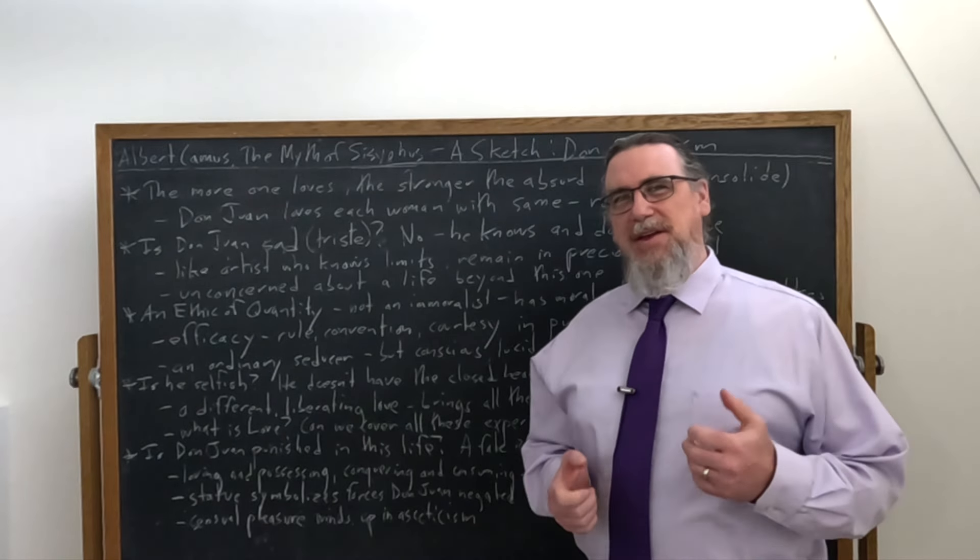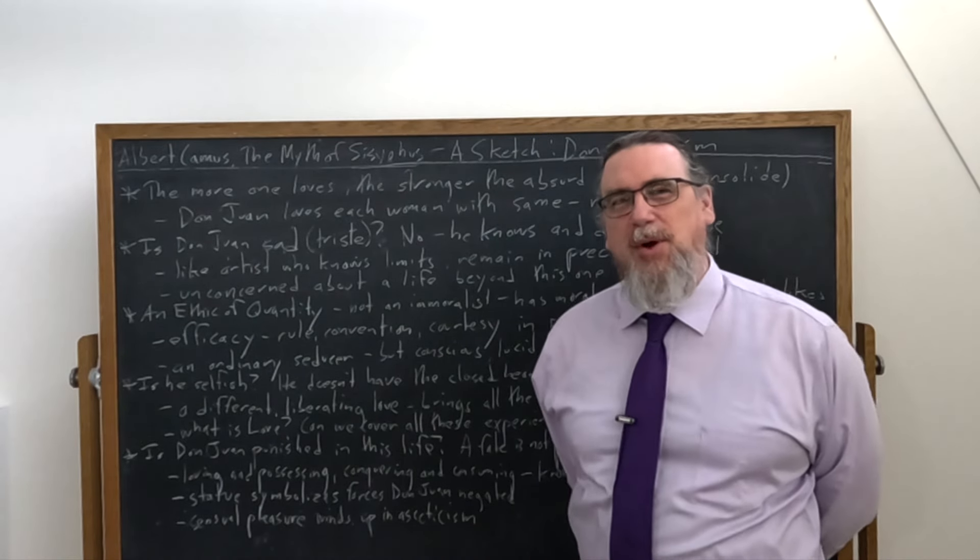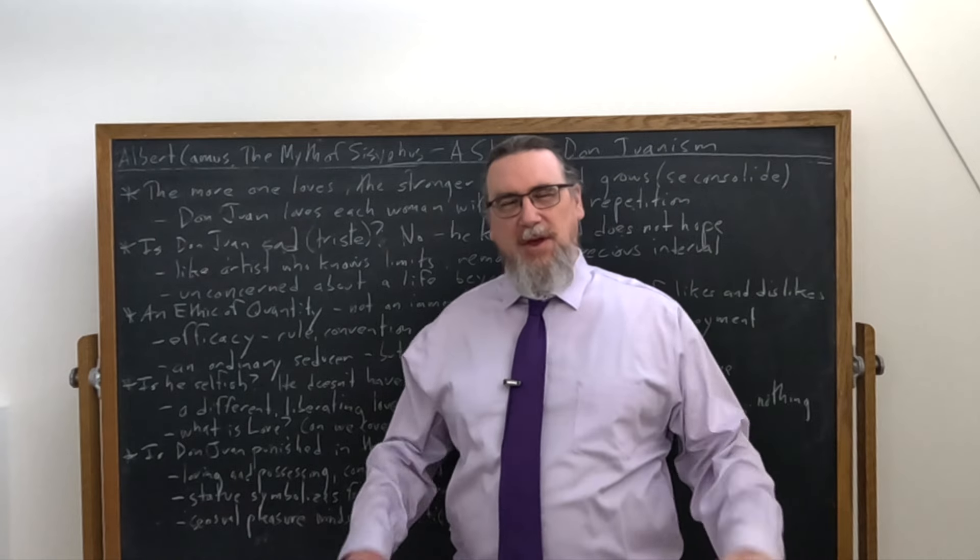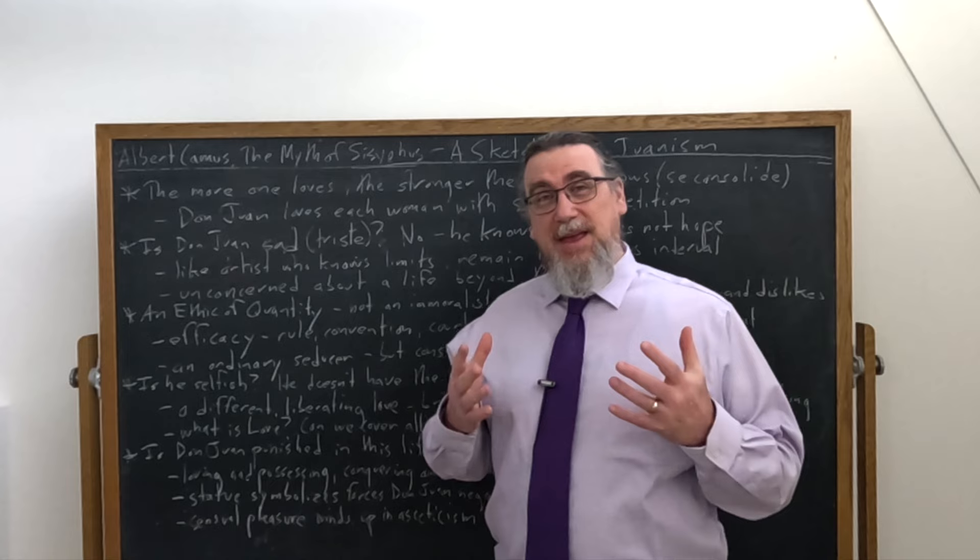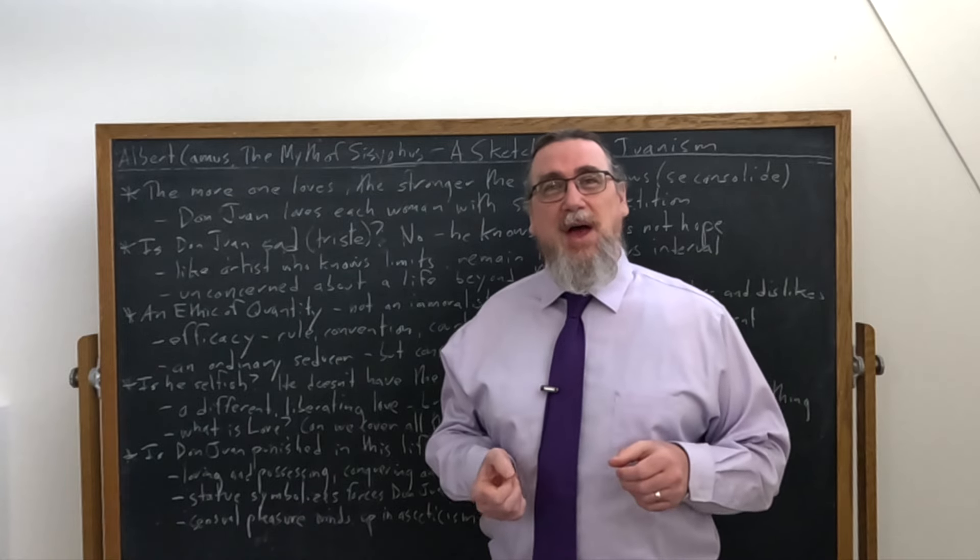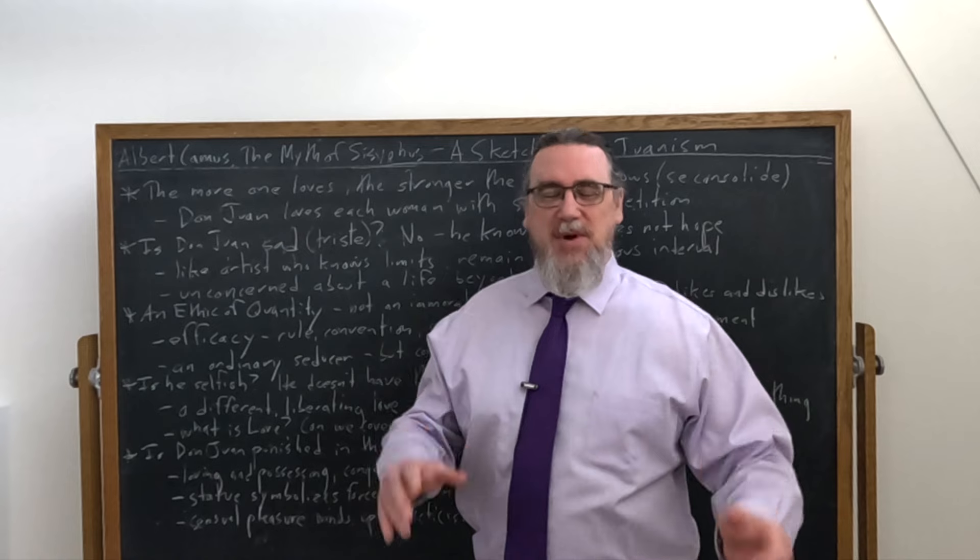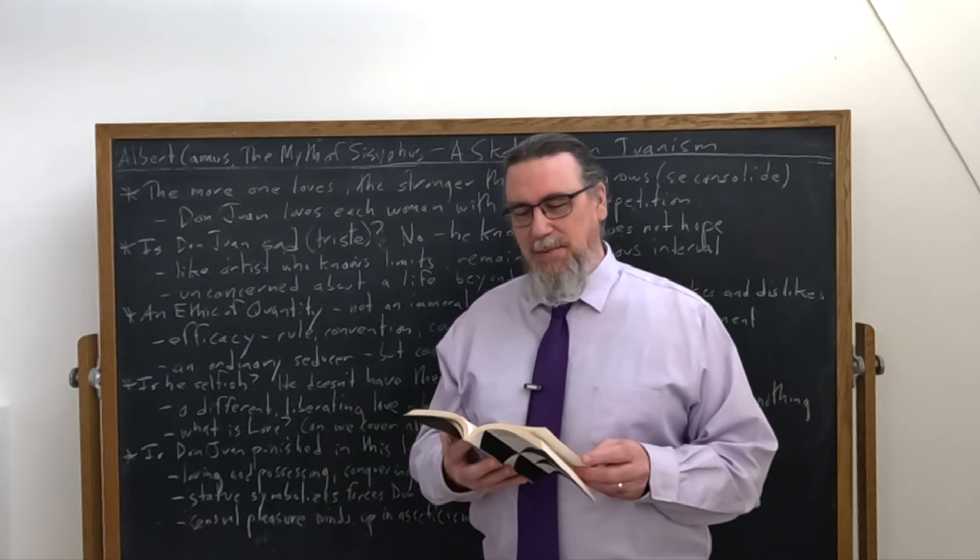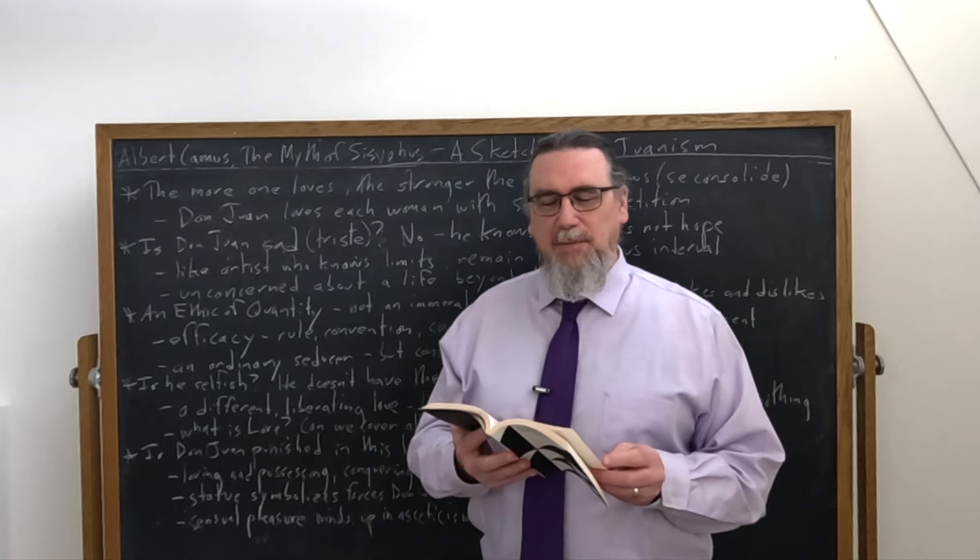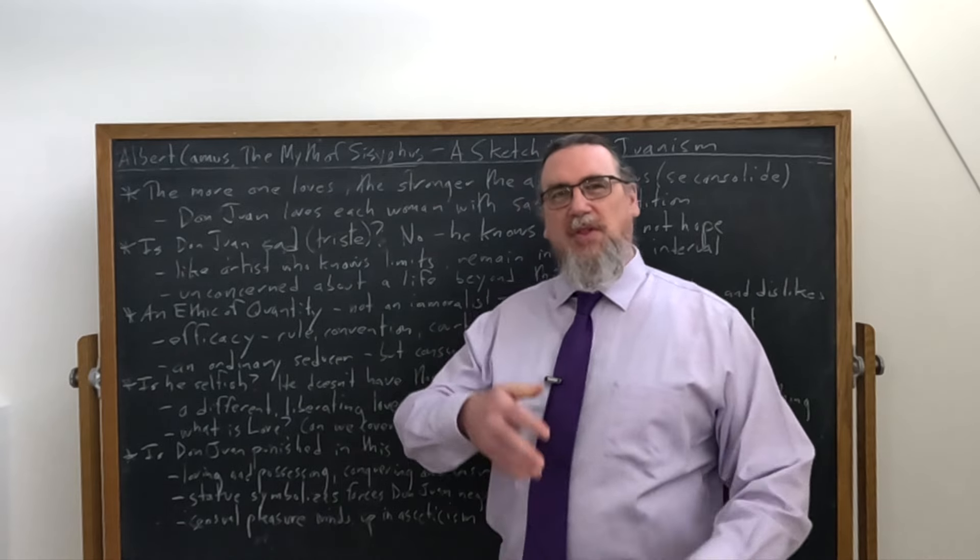The first of the three sketches that Albert Camus is going to provide us with in part two of the Myth of Sisyphus is the character Don Juan. Now he stresses that he's not doing a literary analysis. As a matter of fact, at one point he says, I shall barely have recourse to the legend.